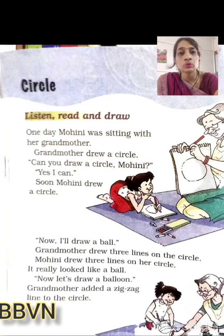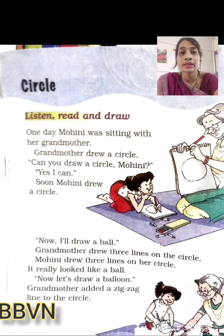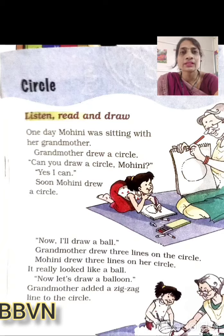Now let's draw a balloon. Aap uski daadi ne bola ki isi ball se hum ek balloon bhi banaate hain. Grandmother added a zigzag line to the circle. So grandmother ne kya kiya? Us balloon pe ek zigzag line add kar di. Zigzag ka matlab hota hai tedhi medhi — jo hum tedhi medhi lines draw karti hain. Jaise hum Z likhte hain, toh Z ko jab hum bar bar likhte jaate hain joint karke, toh woh hoti hain zigzag lines. Toh grandmother ne us ball pe zigzag lines bana di.